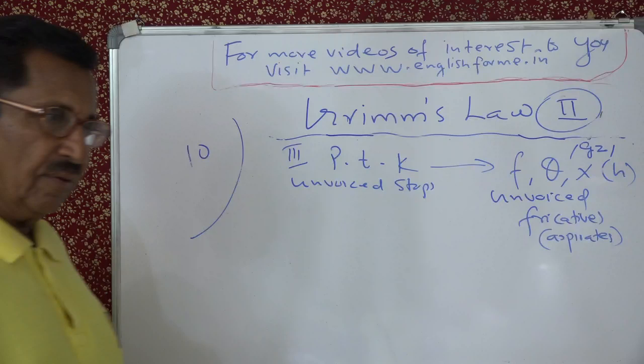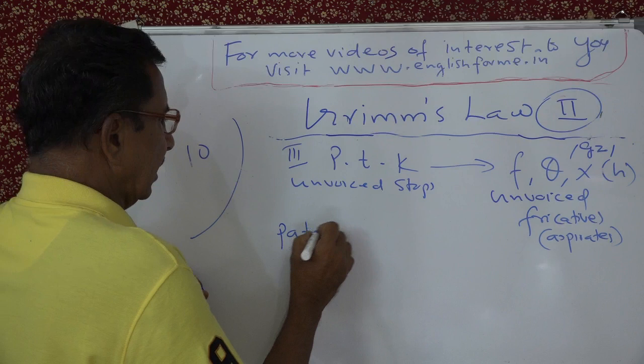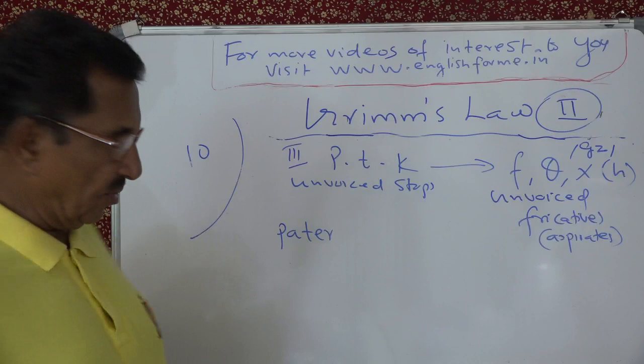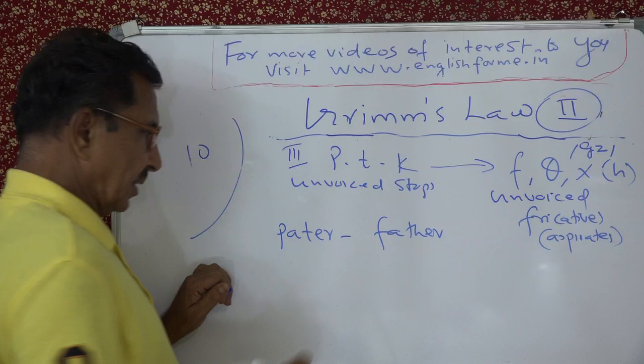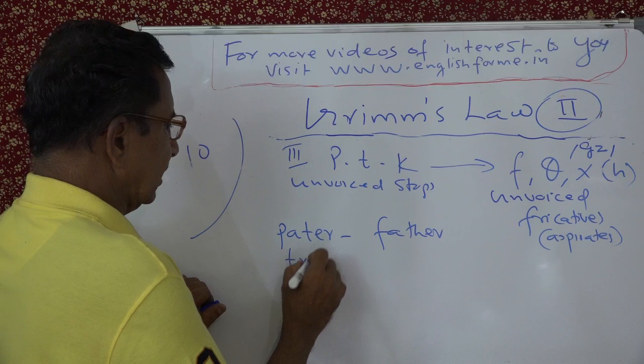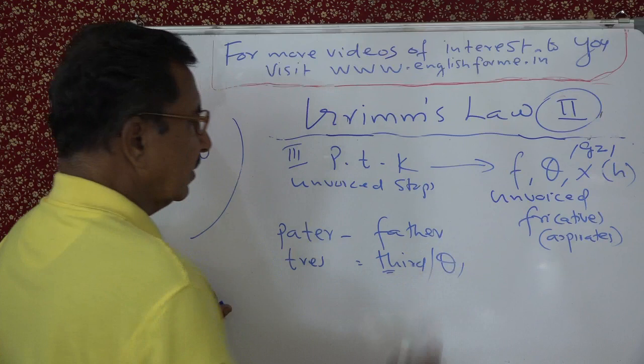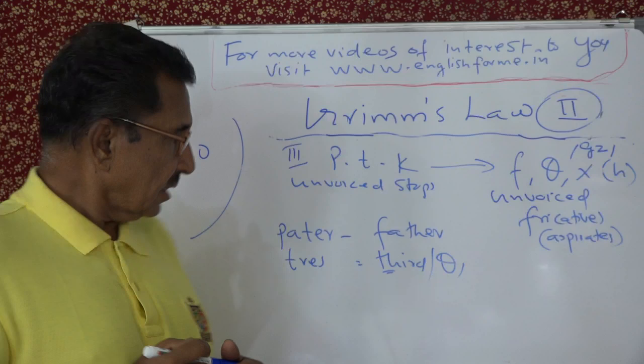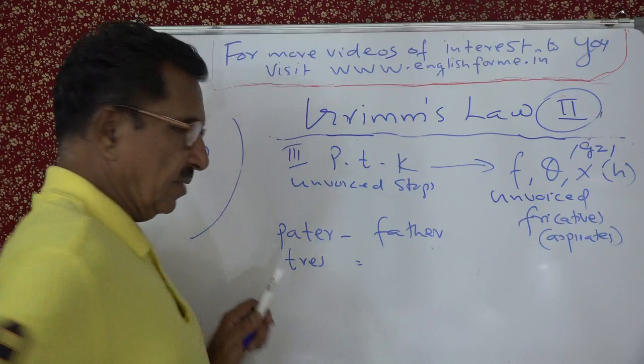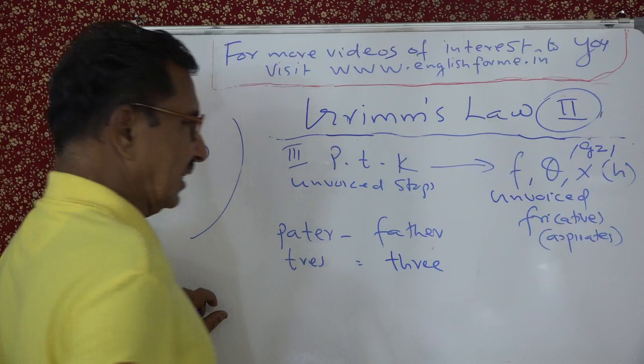The examples are taken from Latin. 'Pater' in Latin — from which 'paternal' comes — is 'father' in English. P has become F. Then 'tres' in Latin gives English 'three'. The Latin T has become English Th. 'Tertius' means third — you can see the correspondence: T in Latin becomes Th in English.